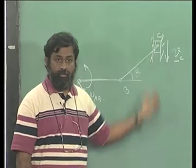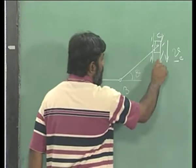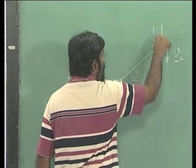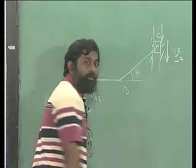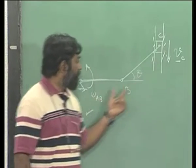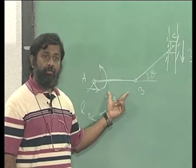along a slot. This slot is actually fixed to the fixed frame. This can move up and down and we need to find out the angular velocity of AB.